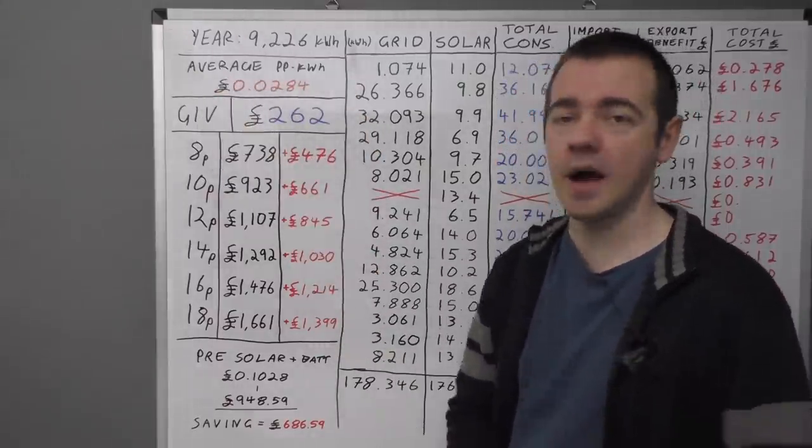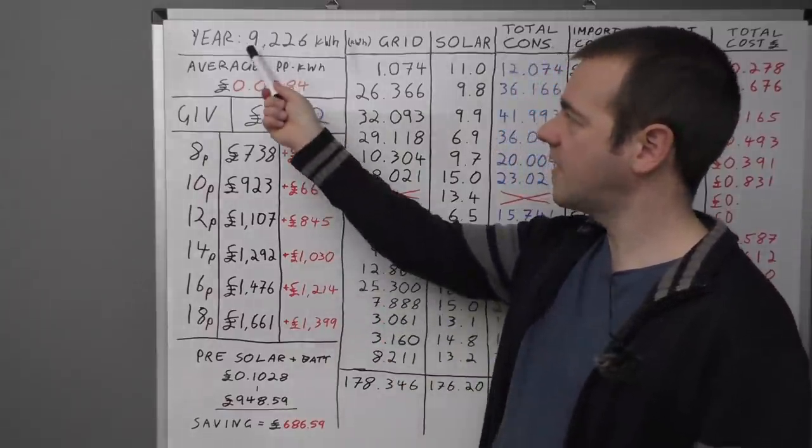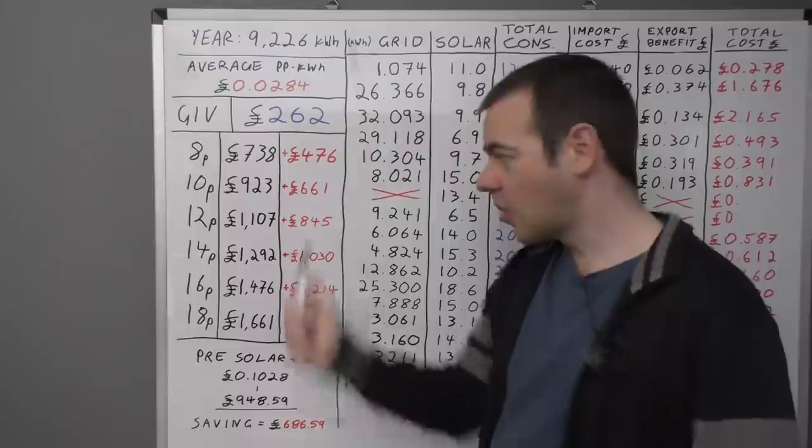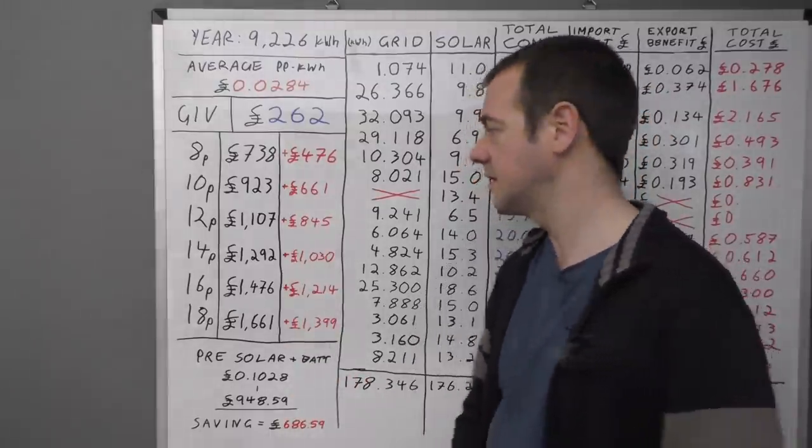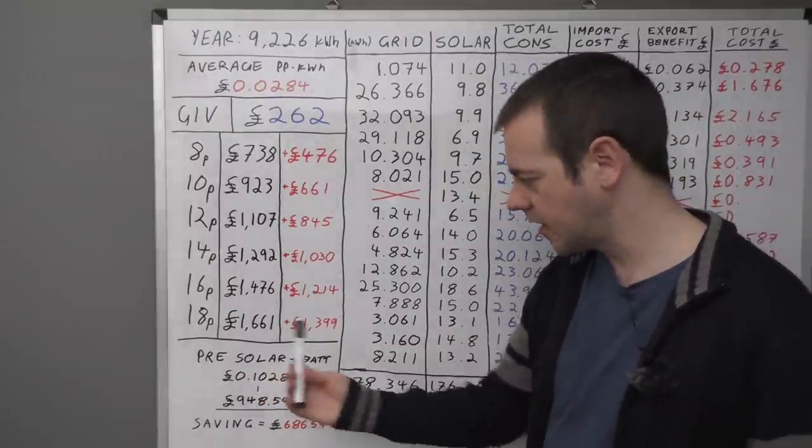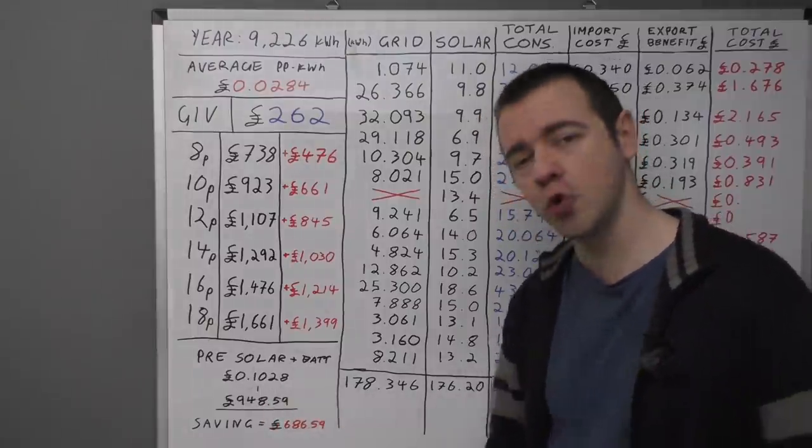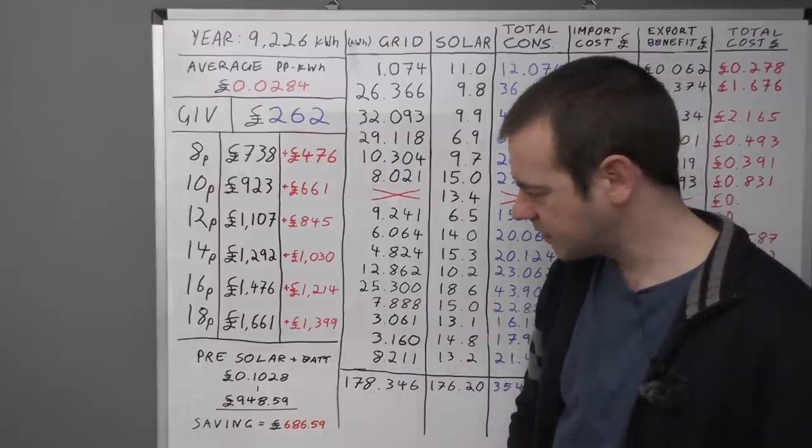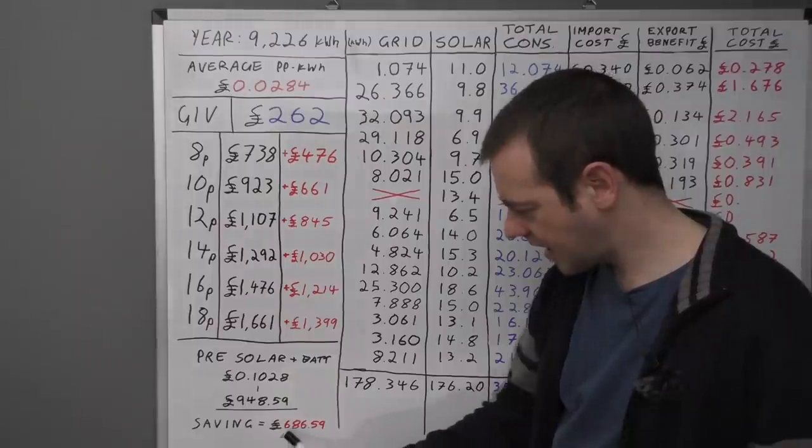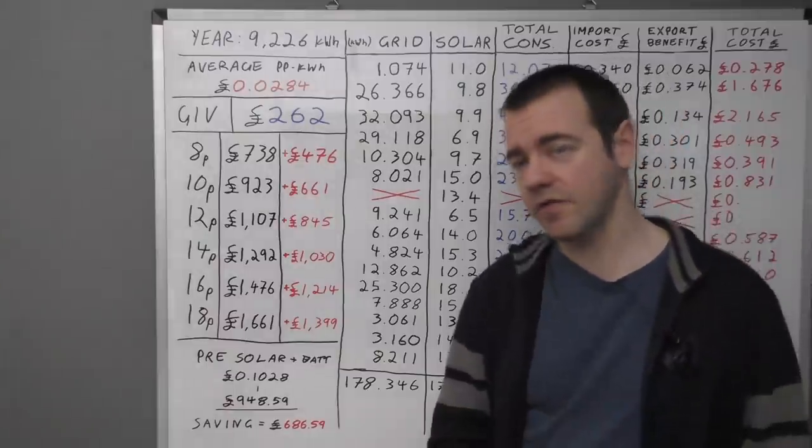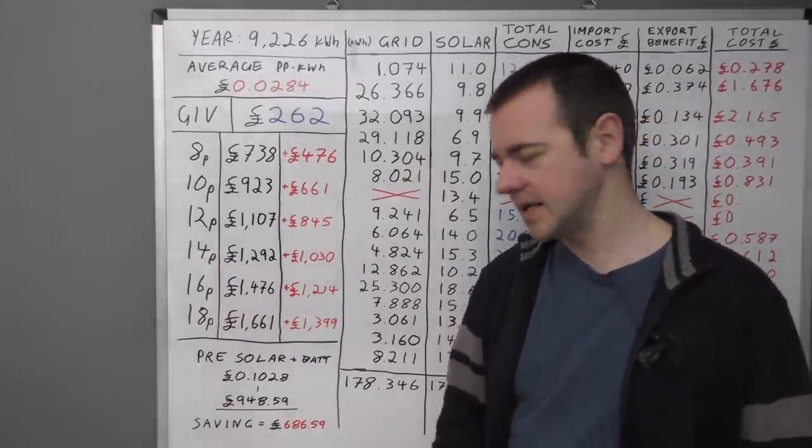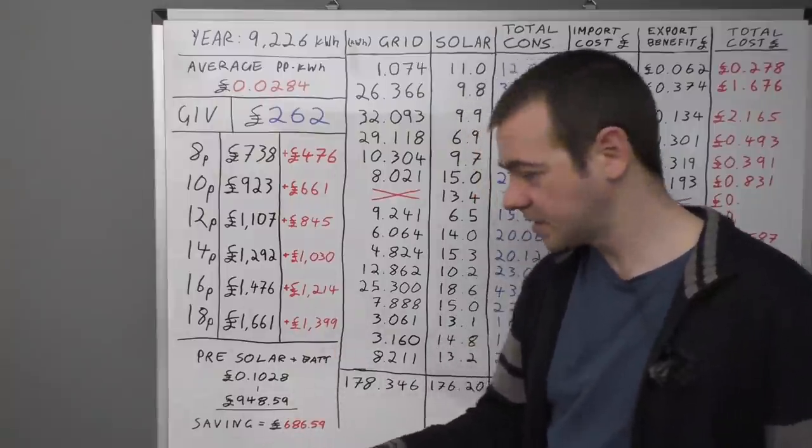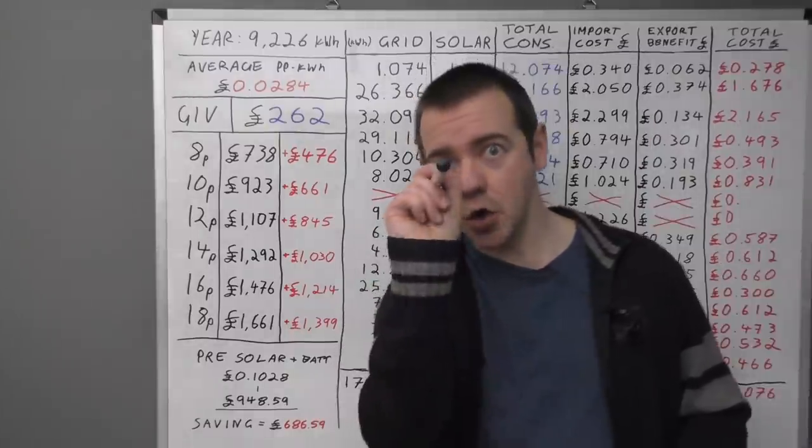All you need to do is, let's for a second just assume you use the same amount of energy I do, 9,226. Find out your pence per kilowatt hour. That should be on your bill. If you just pay a flat rate, like 14p per kilowatt hour on your tariff 24 hours a day, then your average pence per kilowatt hour is 14. If you pay 16p per kilowatt hour, which is a bit above UK average, then you will save £1,214 a year. You need to know what you use now and how much you pay to know how much you will save. This down here are my figures for before I got the solar and the battery. My average pence per kilowatt hour was 10.28 pence, so 10.28p times 9,226 means that I would have ended up spending £948.59. Therefore, in theory, I am £686.59 better off now than when I didn't have anything on my roof or my garage.